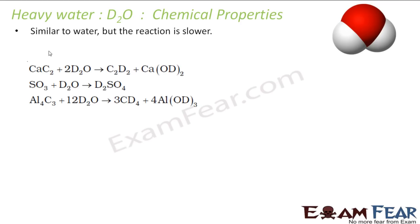We will talk about chemical properties that are also similar to water but the reaction is slower, little slow. If you see the chemical reactions, instead of H2O, we are using D2O. CaC2 plus D2O gives C2D2 plus Ca(OD)2.